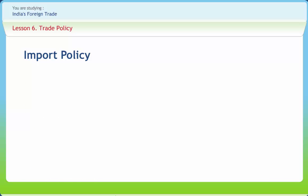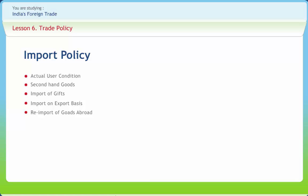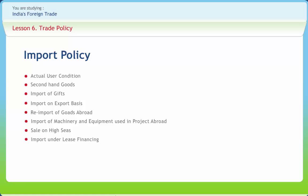The provisions of import are: actual user condition, second-hand goods, import of gifts, import on export basis, reimport of goods abroad, import of machinery and equipment used in projects abroad, sale on high seas, import under lease financing, export promotion capital goods scheme, and duty exemption or remission scheme.